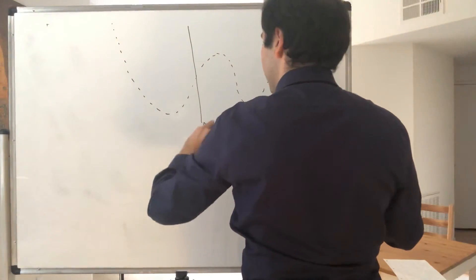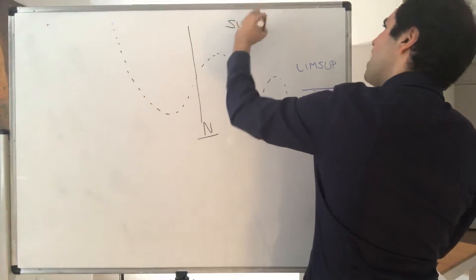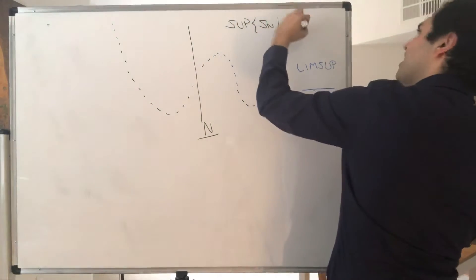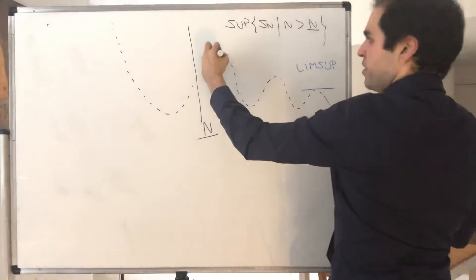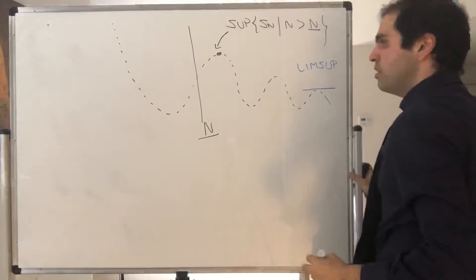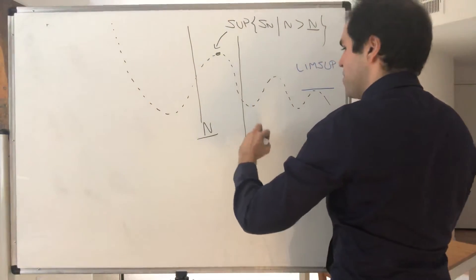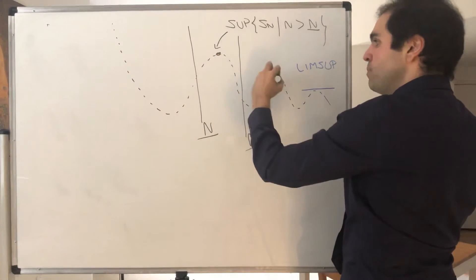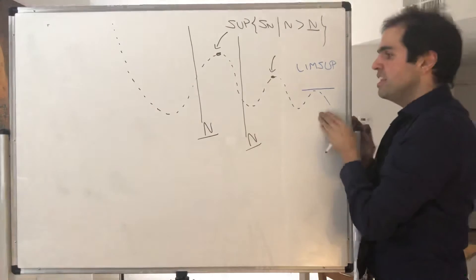So consider capital N, fix capital N, and consider the biggest value of Sn after that threshold. Well, here should be somewhere here. But what if you increase that threshold? So let's say capital N is now bigger. Then that supremum is actually smaller, because after this you have fewer values to consider.